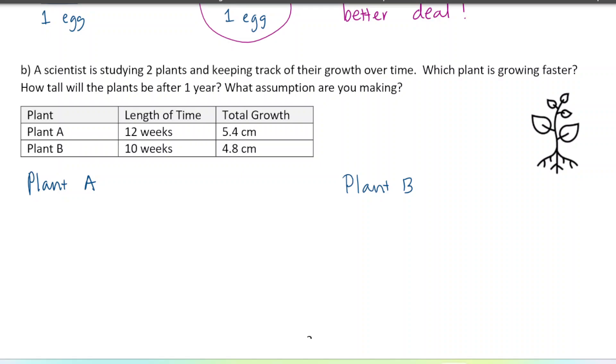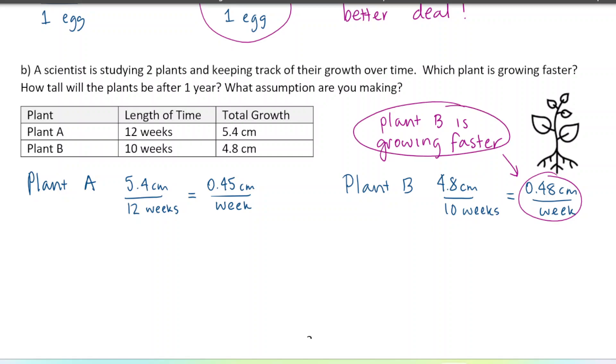Let's convert them both to unit rates because unit rates are great for comparing and we're gonna put the time in the denominator. So plant A is 5.4 centimeters for 12 weeks. We're gonna divide those numbers to get our unit rate. 5.4 divided by 12 is 0.45 centimeters per week. Okay, and then plant B we have 4.8 centimeters for 10 weeks. This one I can do using mental math, you just move the decimal over. Divide those two numbers and you get 0.48 centimeters per week. So plant B is growing faster because its unit rate is higher - it's growing more per week compared to plant A. So that's part one done. Which plant is growing faster? Plant B.